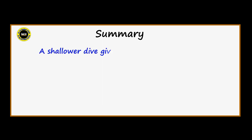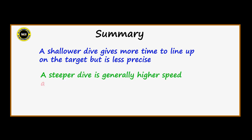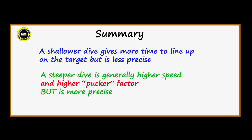In summary, if you use a shallower dive angle, you'll generally approach at a lower speed and have longer to line up on the target, but your release point will probably be less precise. If you dive more steeply, you're going to pick up more speed and things are going to happen a lot more quickly, but your release point will be more precise. Let's go out to the range and see that in practice.